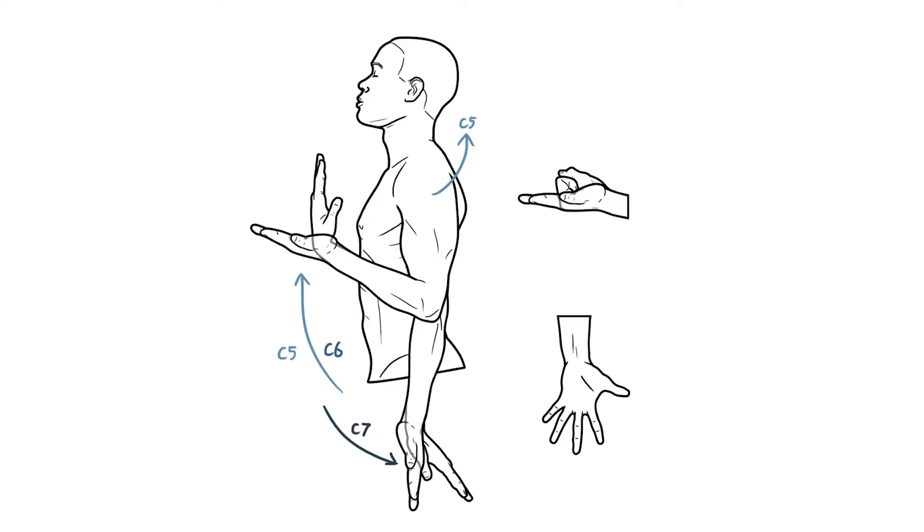Movements of the wrist are also controlled by C6 and 7, only this time C6 controls extension whilst C7 is responsible for flexion. As we move distally, the lower nerve roots start taking over, so C7 extends the digits, but flexion of the fingers is mainly controlled by C8. In the hand, C8 and T1 share joint custody over movements of the thumb, but abduction and adduction of the fingers is pretty much only supplied by T1.